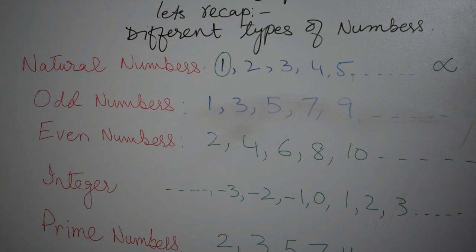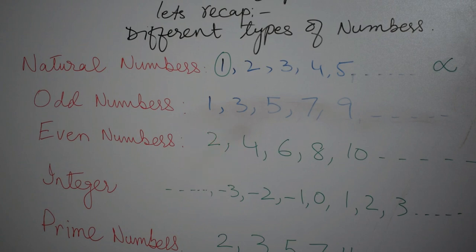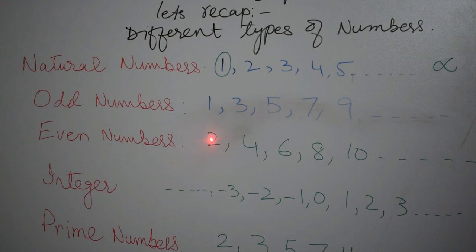Odd numbers are the numbers which are not divisible by two. Here you can see that none of these are divisible by two: one, three, five, seven and nine. These are not divisible by two. And then comes the even numbers. You see that here the numbers which are written ahead of even numbers are two, four, six, eight and ten and so on. The property of these numbers is that these are divisible by two.